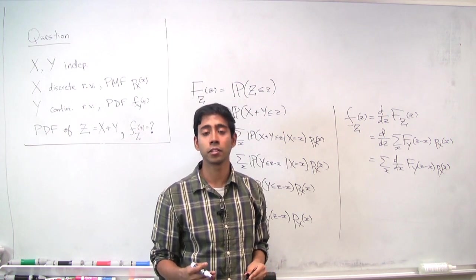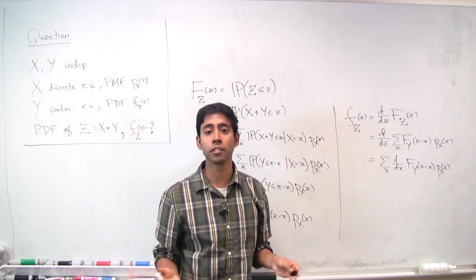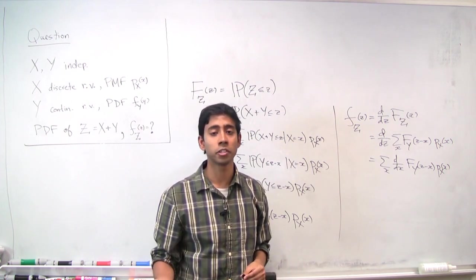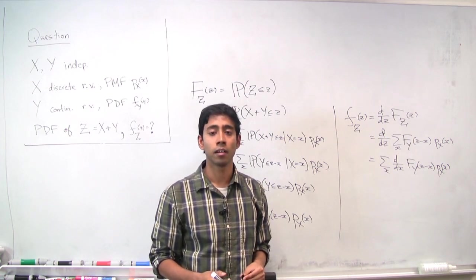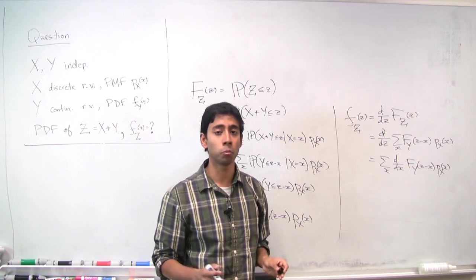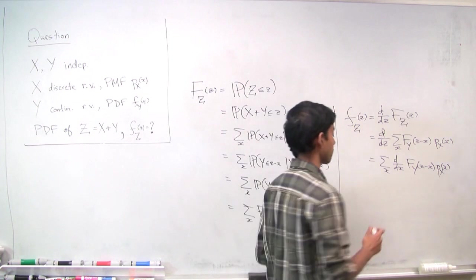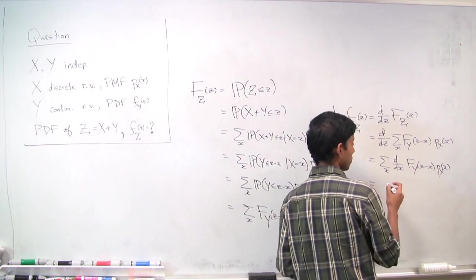But if x took on, for example, a countably infinite number of values—a geometric random variable, for example—this would actually require some formal justification. But I'm not going to get into that.